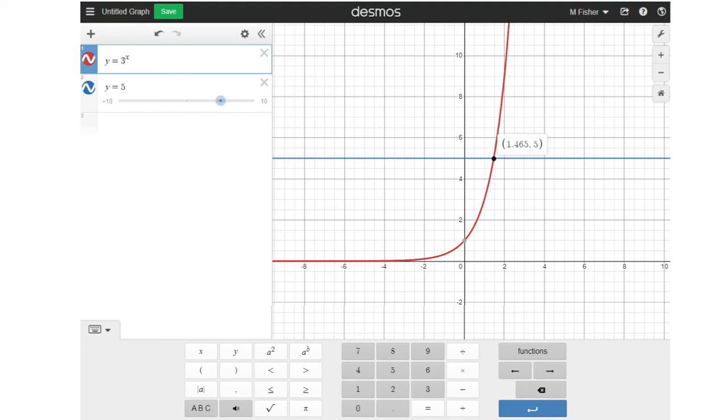Now just a note here, if you want to type an equation that has an exponent, this is your exponent button down here. The other button, this one right here, that's only if you want an exponent of 2. But if you want any other exponent, you use this button that says a to the exponent b. So when I typed this in, I went y equals 3, and then I pressed this button to get the exponent, then I typed x.